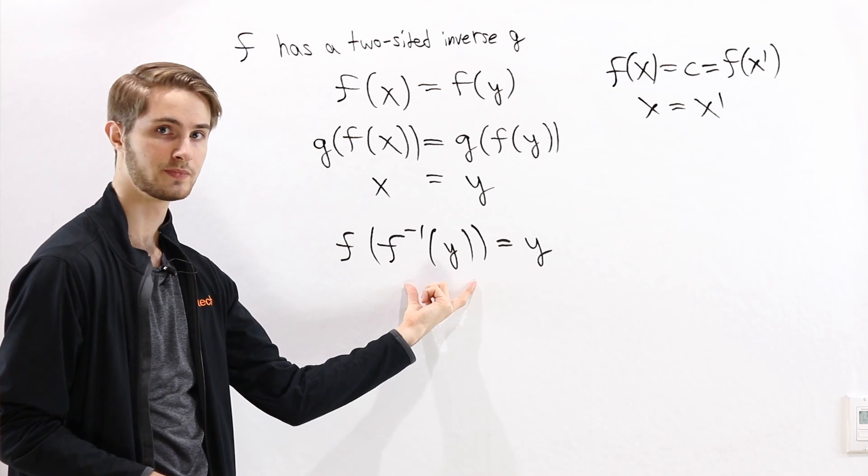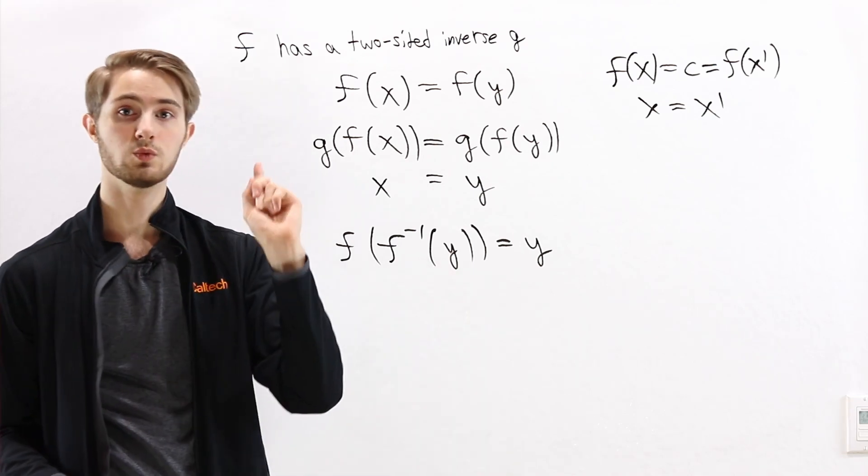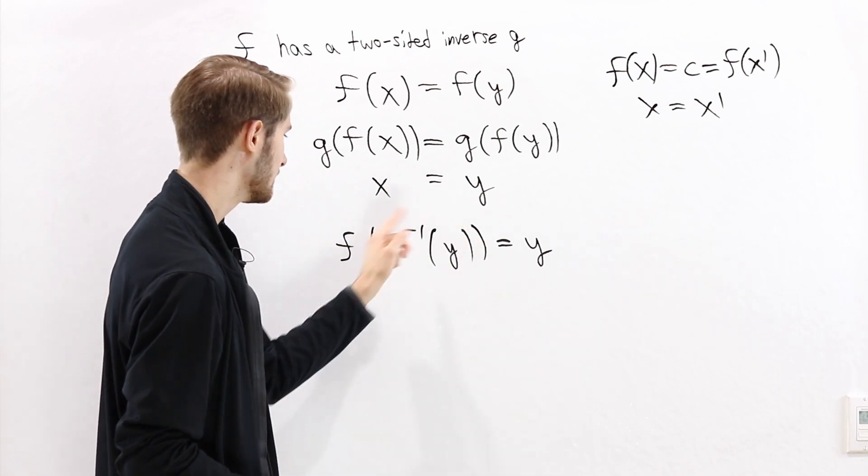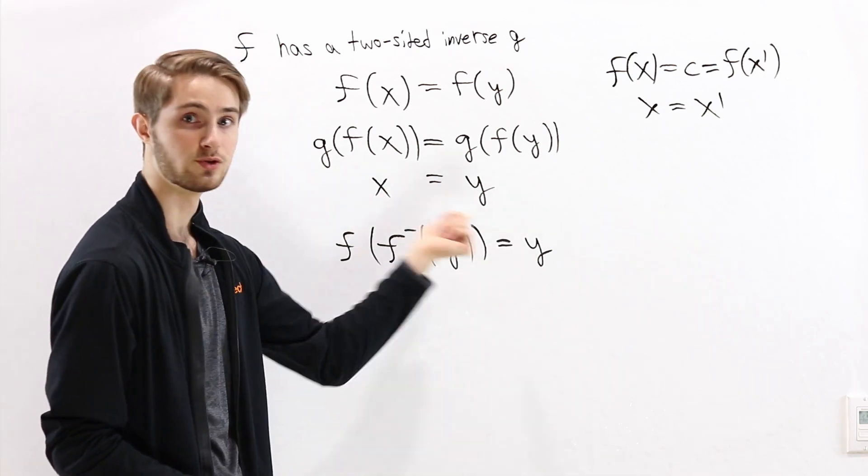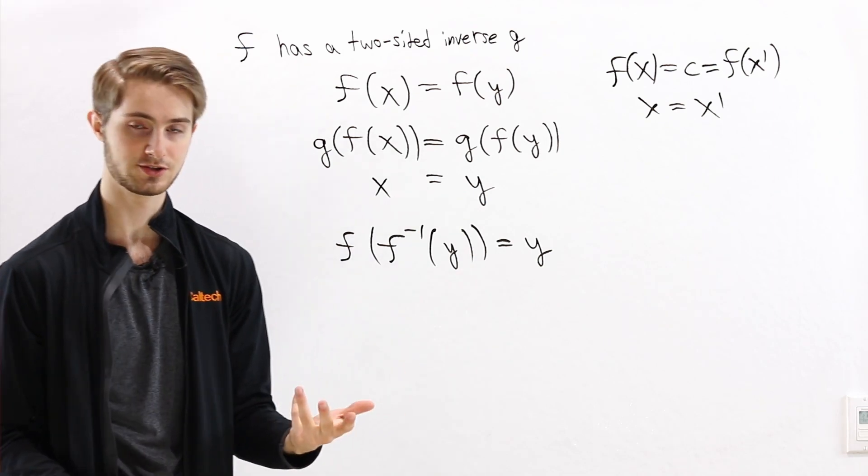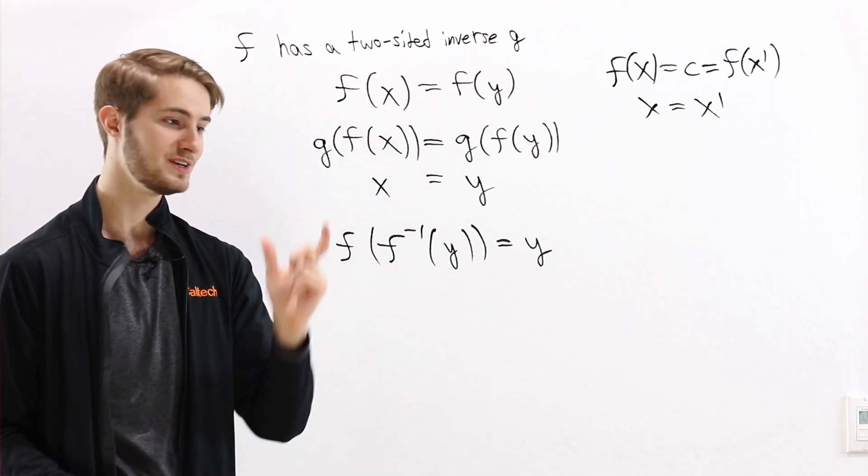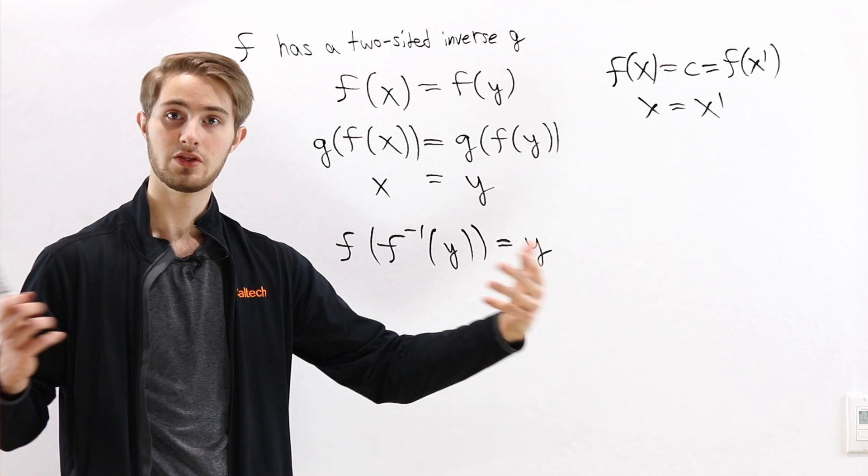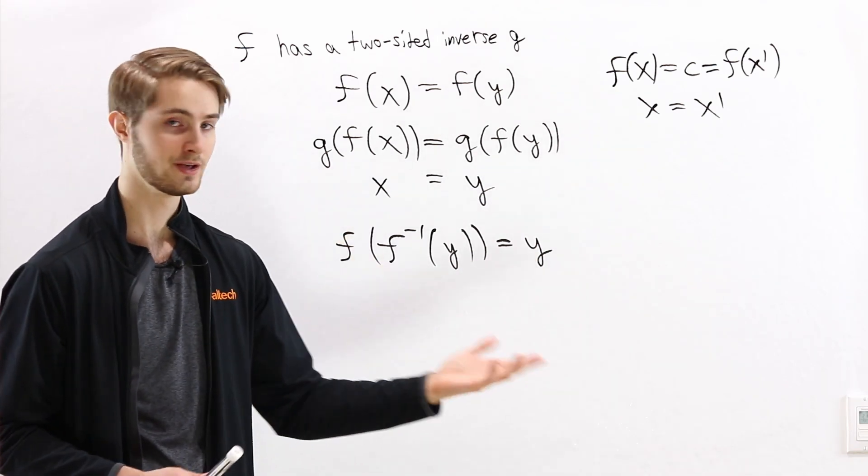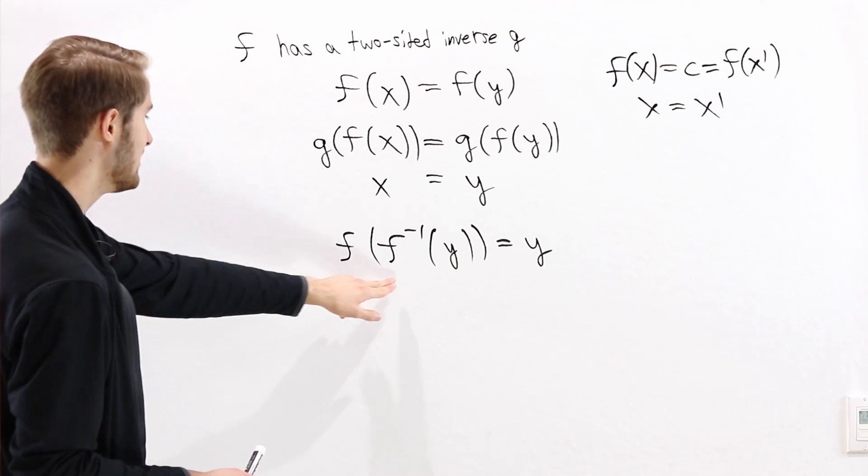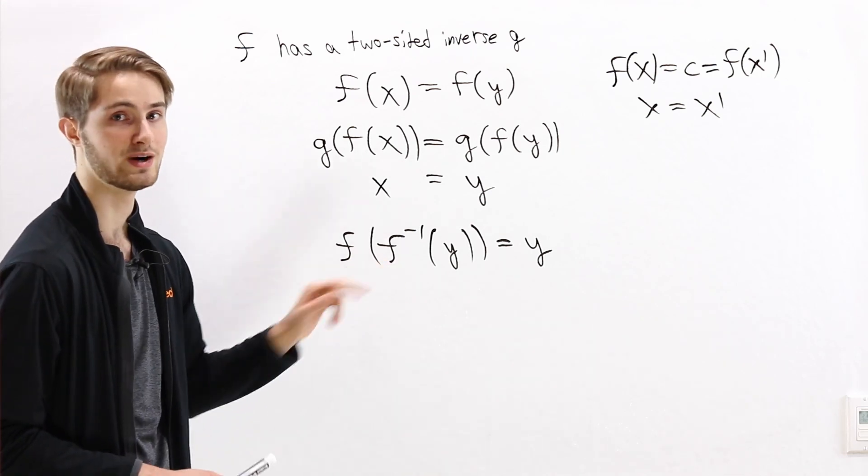In other words, there is only one choice that we can pick for the value of f inverse of y to make the function satisfy the requirement for a right inverse. And if there's only one choice at each input point, then altogether there can be at most one choice for a right inverse function. And that means that the function f has at most one right inverse.